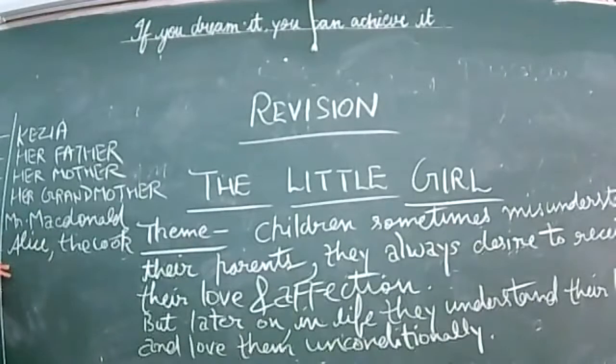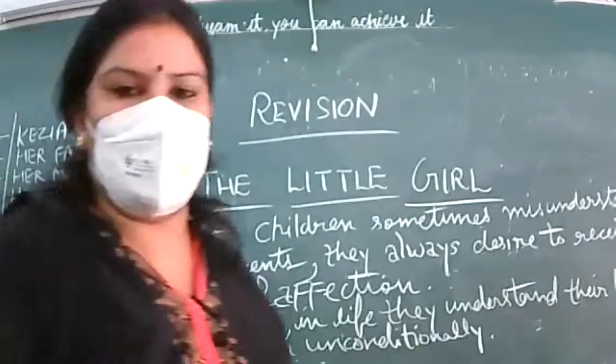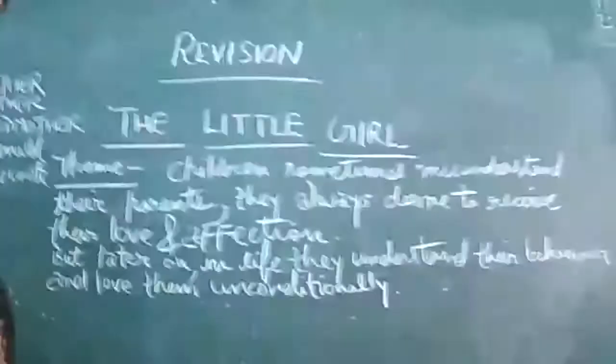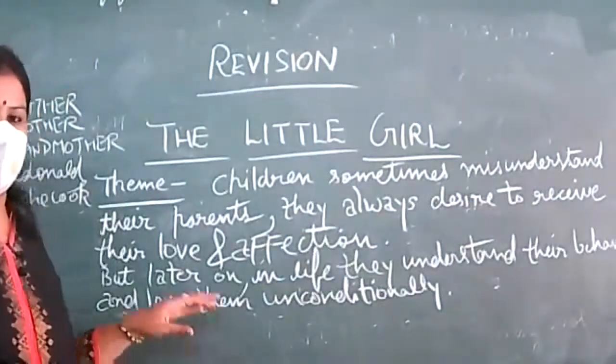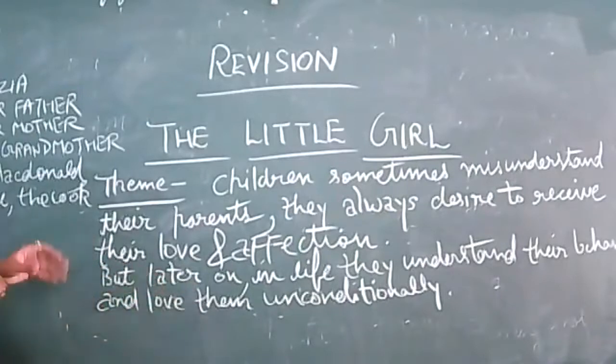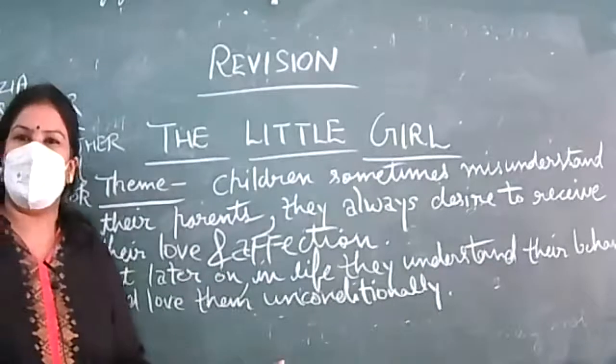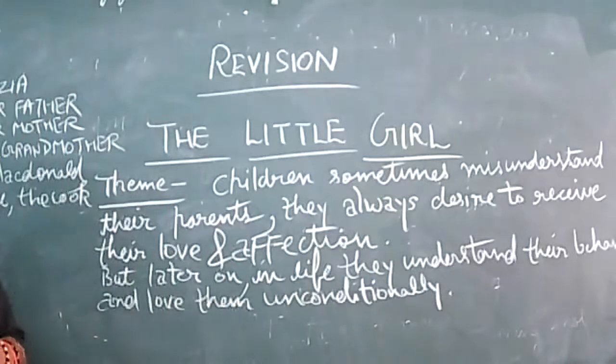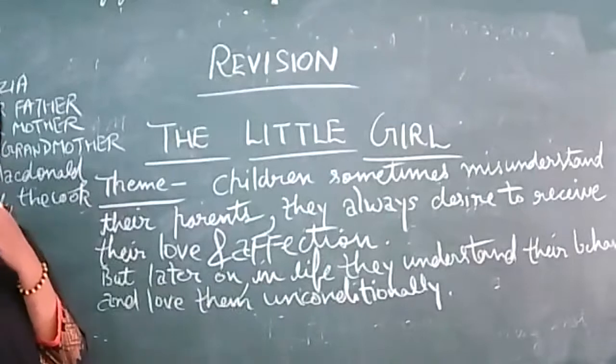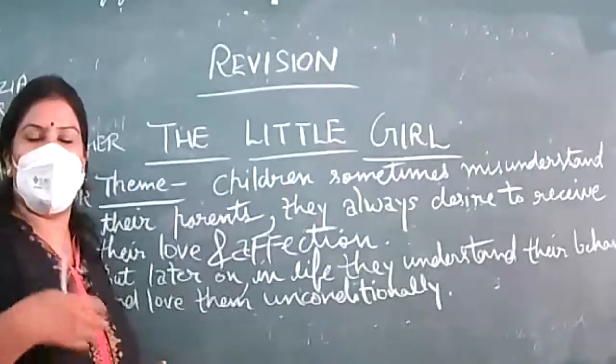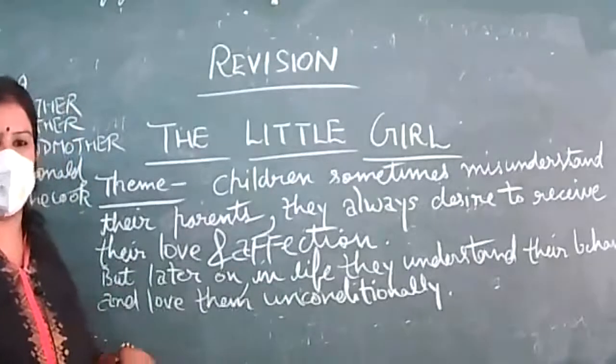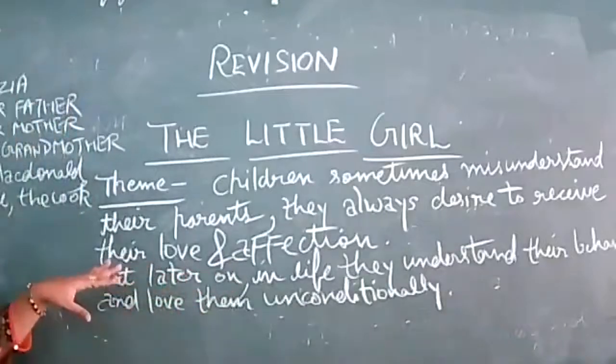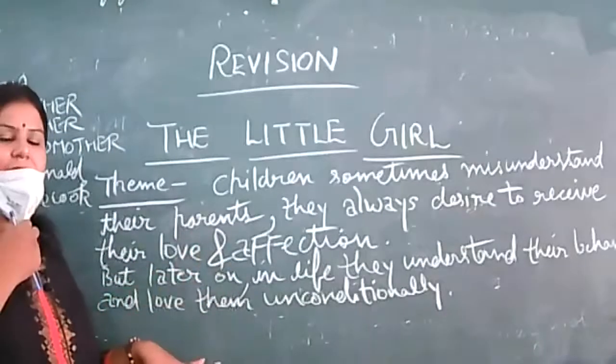The characters are: protagonist is Kezia, a young girl, and then her father, her mother, her grandmother, then one neighbor Mr. McDonald, and Alice the cook. It's a very good story. The theme of the story is children sometimes misunderstand their parents and they always desire to receive their love and affection. We always want that our parents should talk nicely to us, they should love us, take care of us. Whenever they scold us, we start feeling bad, we start arguing with them, sometimes we have fights also and then we get annoyed and eventually we make up with them also.